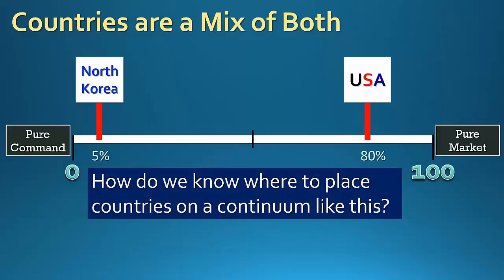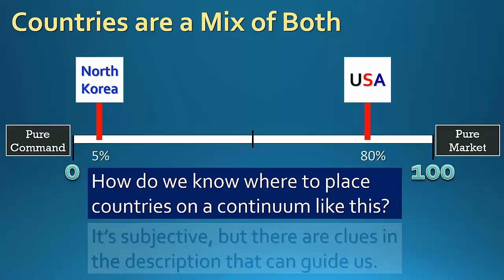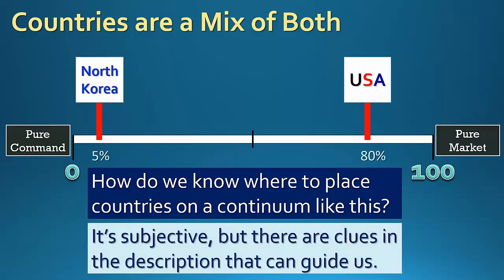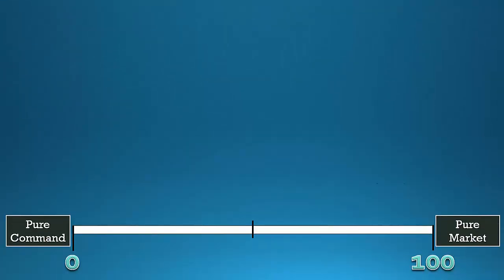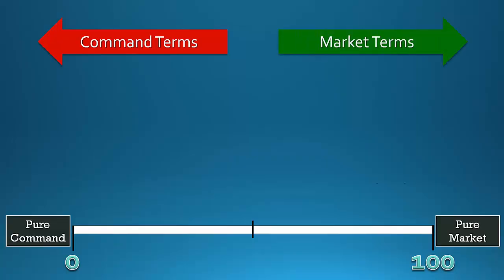So you're wondering: how do we know where to place countries on this line? To be honest, it's pretty subjective, but there are some clues in the description of each country's economy that can give us guidance. What I like to do is look for key words in the description of a given country's economy. Some of those words are command terms that would make me slide a country's label toward the pure command end, while other words and phrases are market-type terms that would push it toward the pure market end.